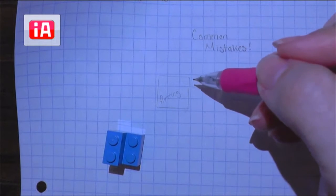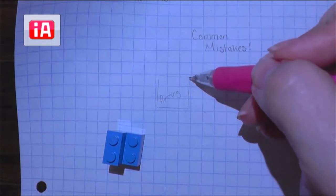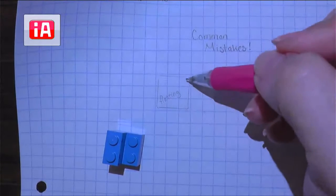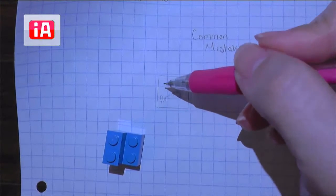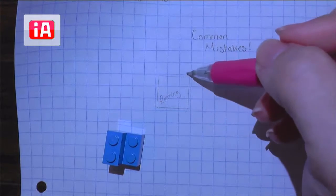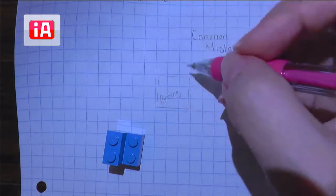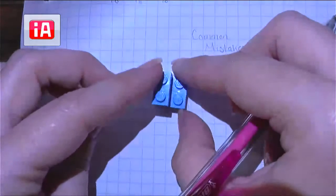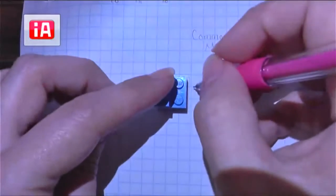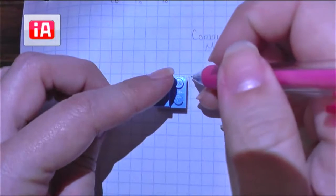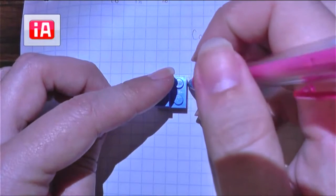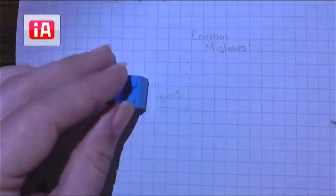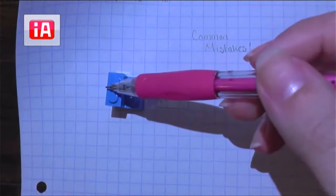It also is really hard to then accurately depict what your object is going to look like because it's all askew, it's not lined up with anything. And because you've traced it, when you trace something, your outline of your object tends to actually be a little bit bigger because your pencil or pen rubs up against the outside of your object, so it's not actually the correct measurements. So we need to make sure that you are not tracing.